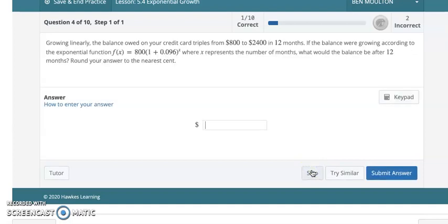Growing linearly, the balance owed on your credit card triples from $800 to $2400 in 12 months. If the balance is growing according to the exponential function f(x) = 800 × (1 + 0.096)^x, where x represents the total number of months, see, this time they've got it in months, so they defined what x is. What would the balance be after 12 months? Round to the nearest cent. I think this one, you're just going to plug in a 12 for your x and grind it out, just like we've been doing. I'll let you guys worry about that one.